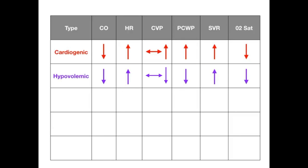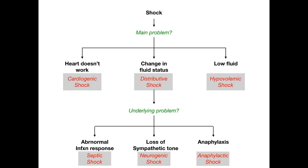For the up-down arrows in hypovolemic shock: cardiac output is down because there's not enough volume. Heart rate is up to compensate. Central venous pressure is unchanged or down. Pulmonary capillary wedge pressure is also down because there's less fluid in the pulmonary capillaries. Systemic vascular resistance is up as the body compensates. Oxygen saturation is down.